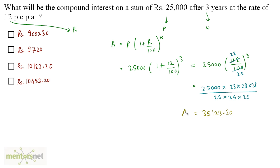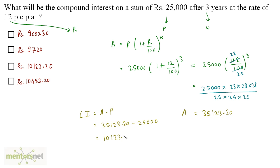We have the amount and the principal, so the compound interest = Amount − Principal = 35,123.20 − 25,000 = Rs. 10,123.20. Option C is the correct answer.